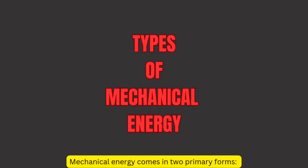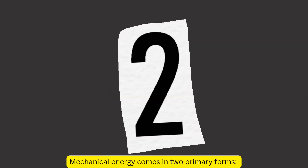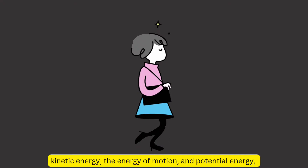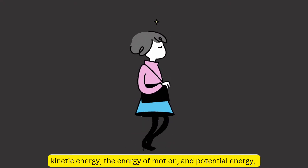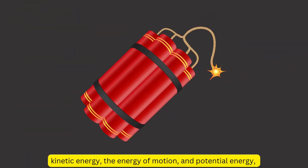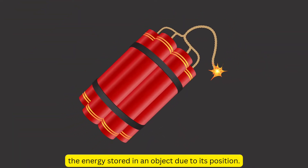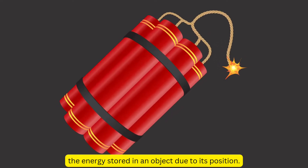Types of mechanical energy. Mechanical energy comes in two primary forms: kinetic energy, the energy of motion, and potential energy, the energy stored in an object due to its position.